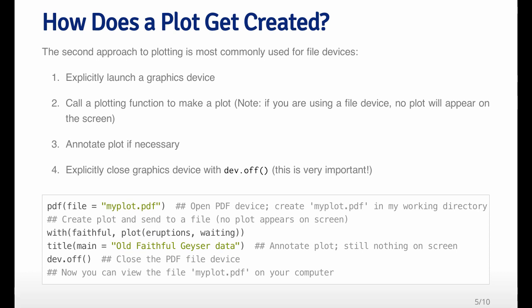After you create the plot and annotate it, you have to close the graphics device with the function dev.off. Once you've closed the graphics device, the plot is complete. If you sent it to a file, you can open the file on your computer, include it in a presentation, or email it to someone. Here's some code that opens the PDF device with the pdf function, giving it a file name — in this case myplot.pdf. You make the plot, do some annotation, then close it with dev.off. After calling dev.off, there should be a file in your working directory called myplot.pdf, which you can open with any PDF viewer.